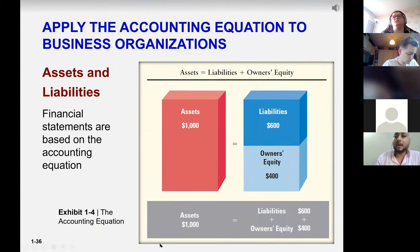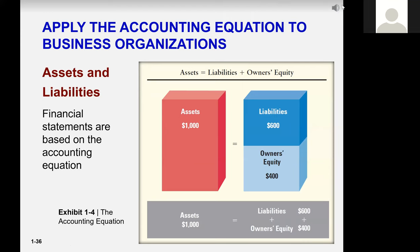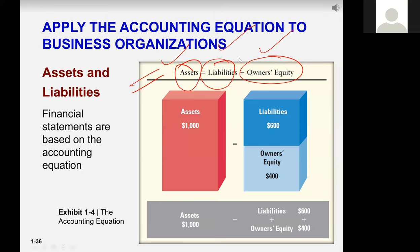The accounting equation is: Assets equals Liabilities plus Owner's Equity. We will talk about what assets, liabilities, and owner's equity mean after a 10-minute break. For now, just remember that Assets equals Liabilities plus Owner's Equity.